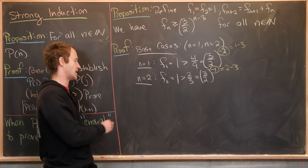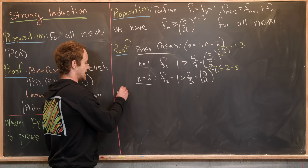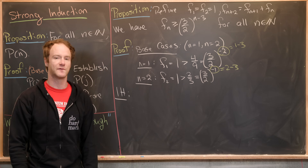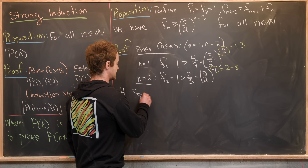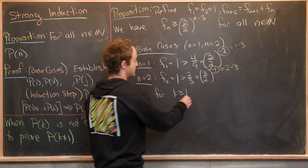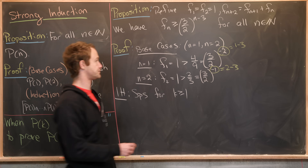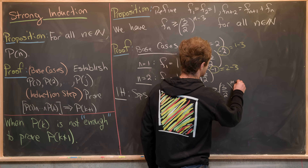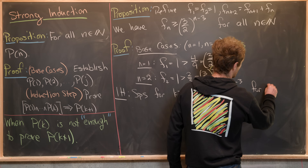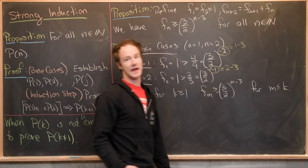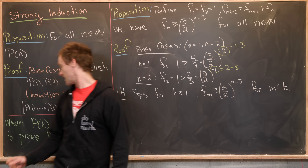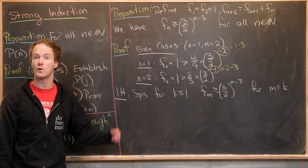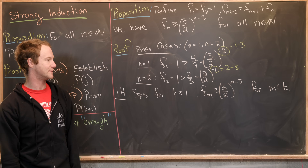Now let's move on to the induction hypothesis. Suppose for some k ≥ 1, f_m ≥ (3/2)^{m-3} for all m ≤ k. That covers f_1, f_2, f_3, all the way up to f_k.